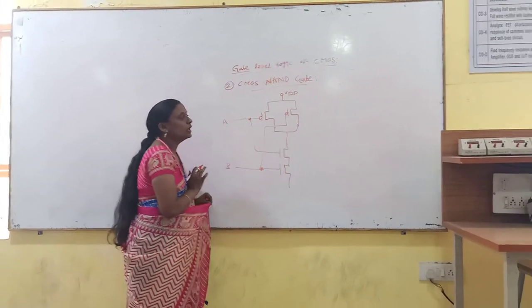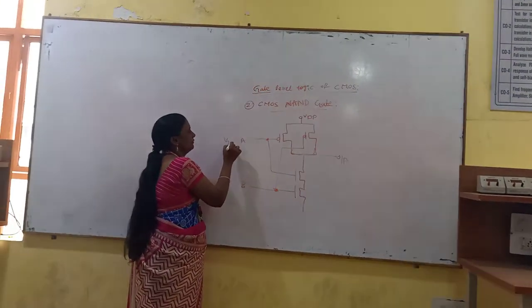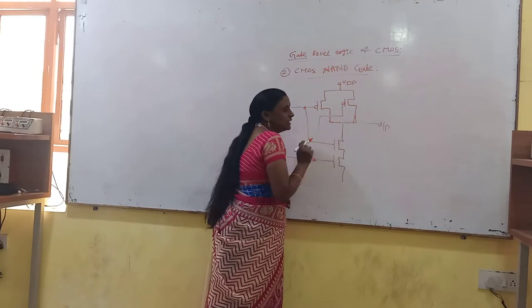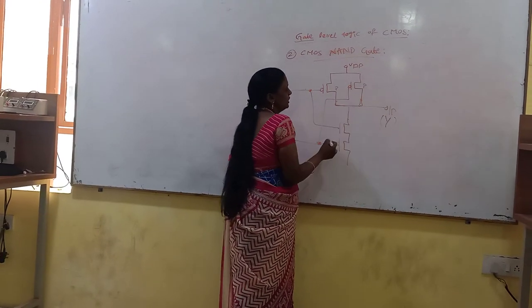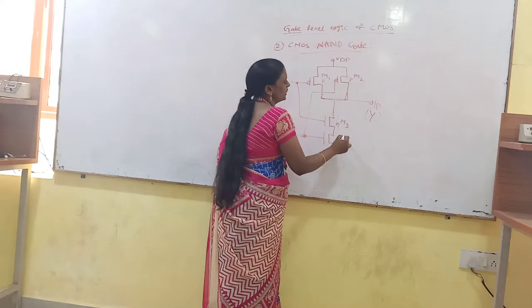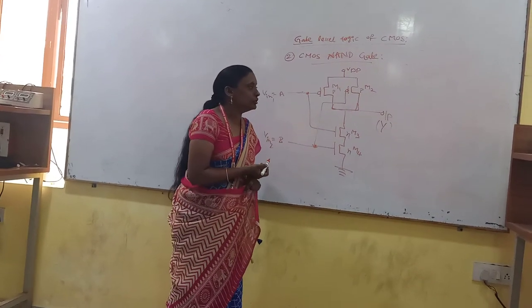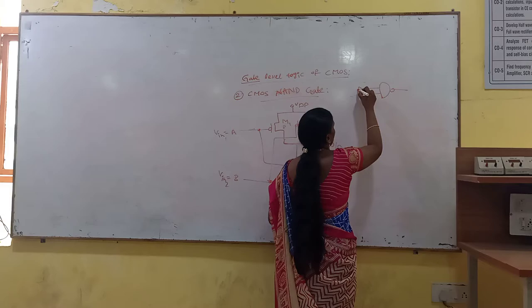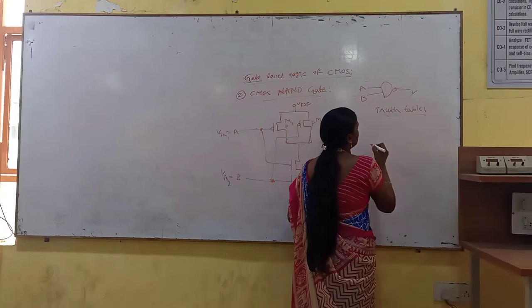At the common node between the PMOS and NMOS sections, we take the output Y. Input A and input B are the two inputs. This is M1 (PMOS), M2 (PMOS), M3 (NMOS), and M4 (NMOS). Ground is at the bottom. Before going to the working, we look at the truth table. The NAND symbol has two inputs A and B, and output Y. Truth table: A=0,B=0 → Y=1; A=0,B=1 → Y=1; A=1,B=0 → Y=1; A=1,B=1 → Y=0.